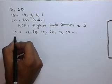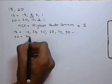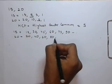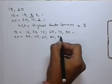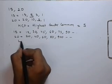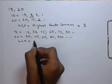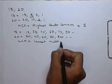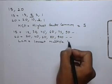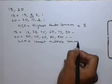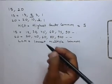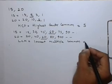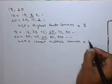Similarly, the multiples of 20 are 20, 40, 60, 80, 100, and so on. The LCM is the lowest multiple that is common. In these two sets of multiples, we can identify easily that the least multiple that is common is 60. So, the LCM of 15 and 20 is 60.